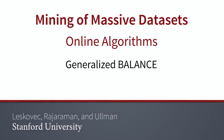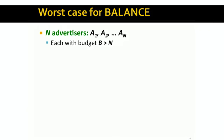Let's say there are N advertisers, A1 through AN, and each advertiser has the same budget B, where B is greater than N.